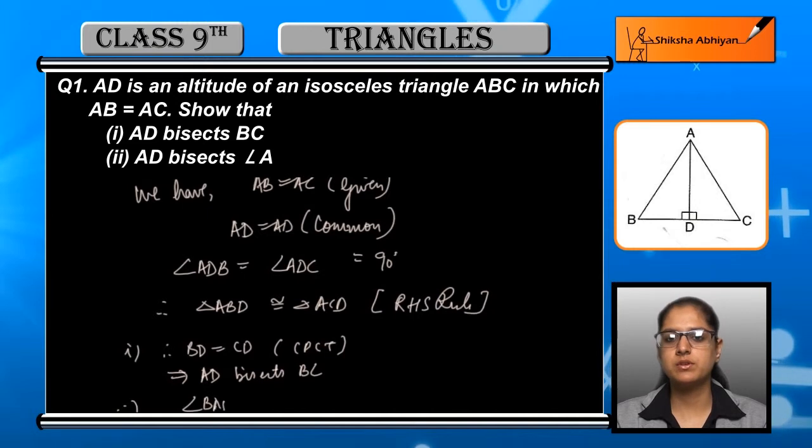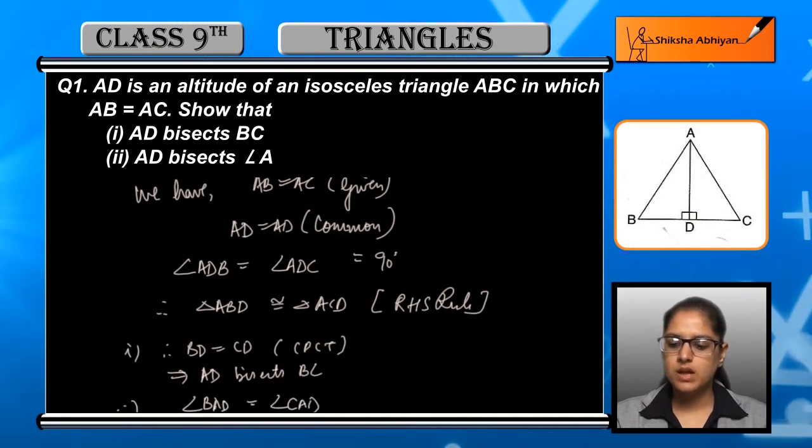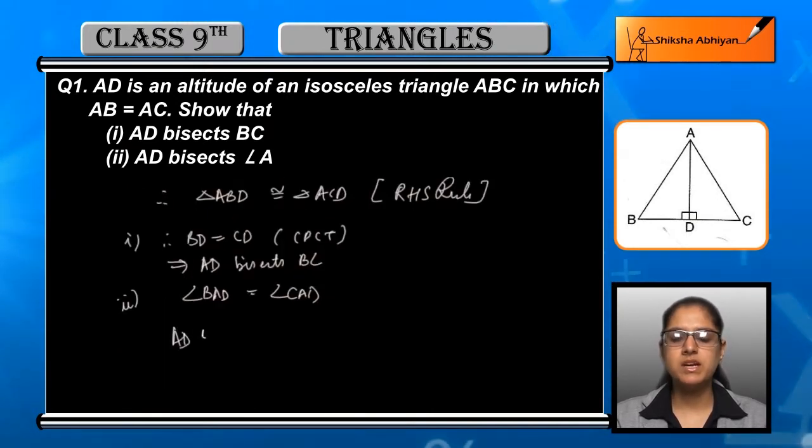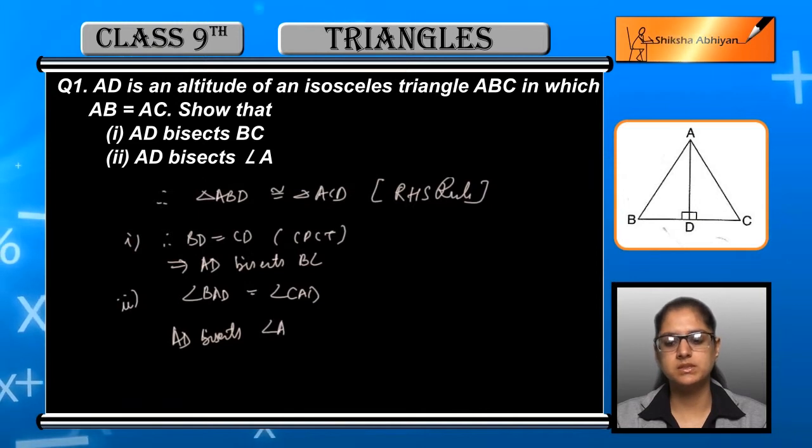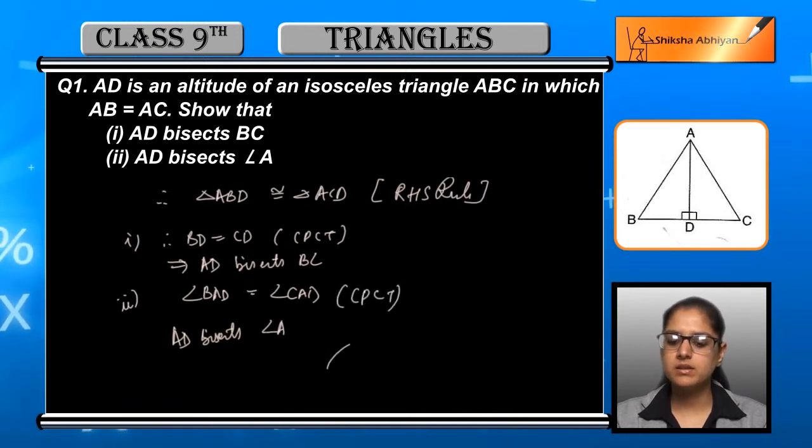Now the first part: we have BD is equal to CD by CPCT, and this time we can say that AD is bisecting the side BC.